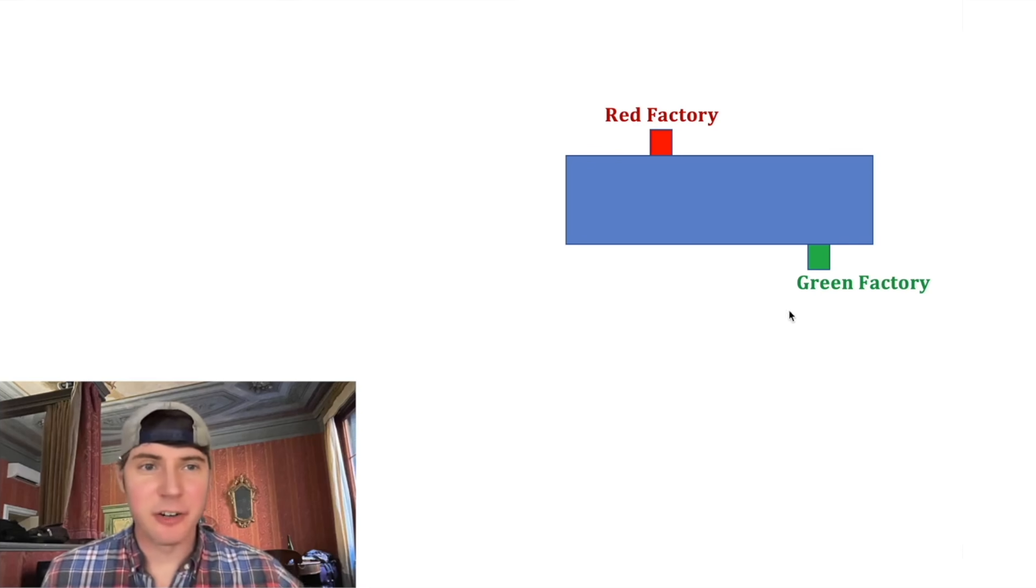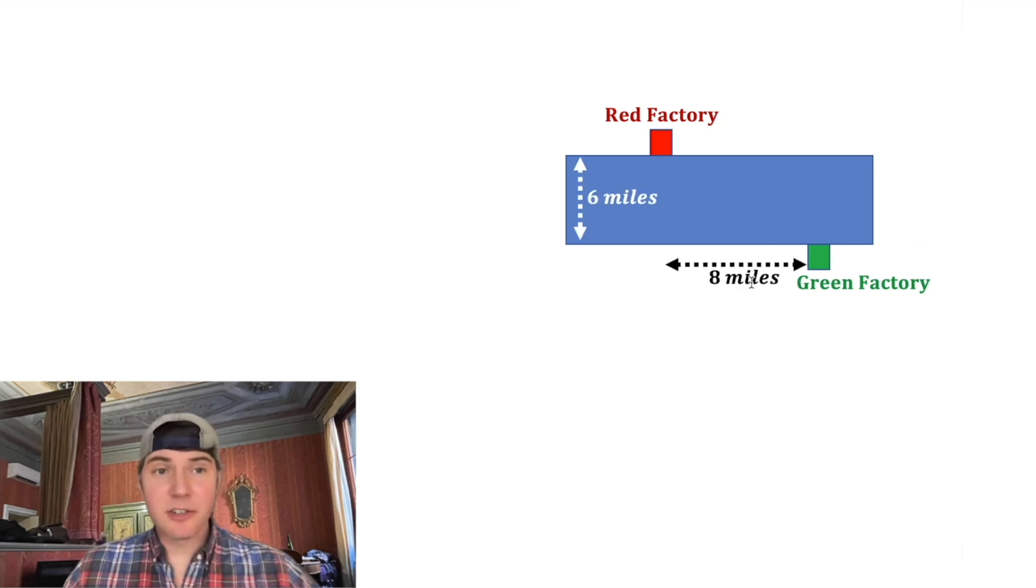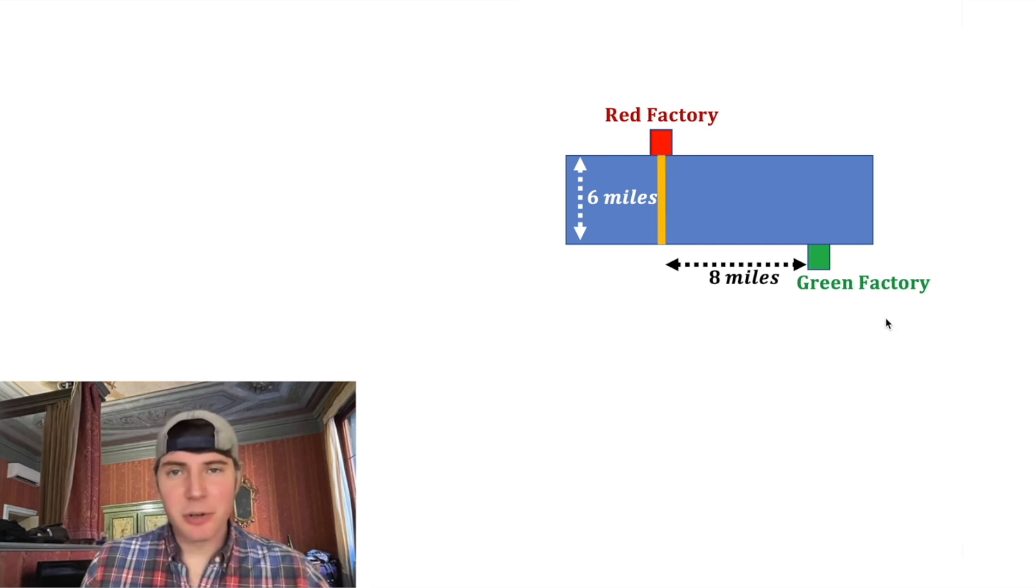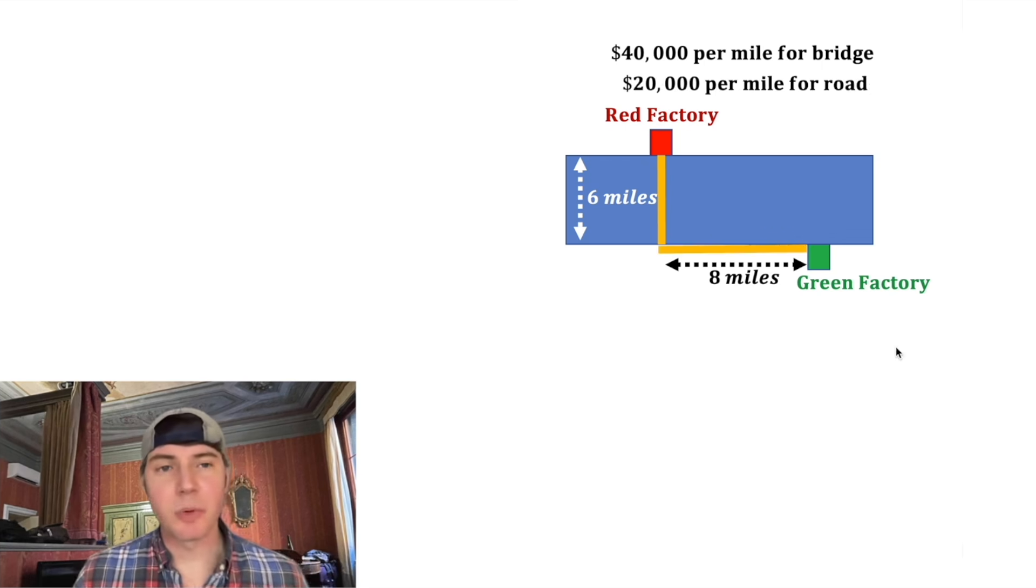I have a red factory over here and a green factory over here. I need to get stuff from my red factory to my green factory, but there's this body of water in the middle that's six miles across, and this distance is eight miles. I can make a bridge across the body of water that's going to cost me $40,000 per mile for the bridge, and then I can build a road all the way to the green factory that's going to cost me $20,000 per mile for the road.